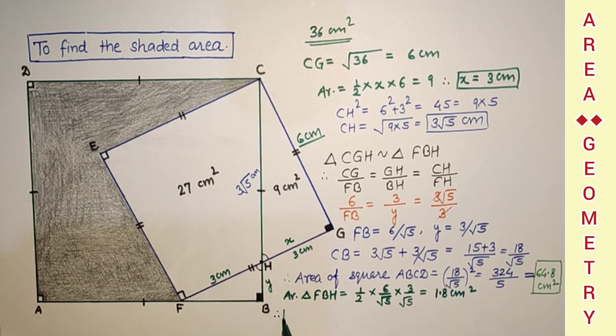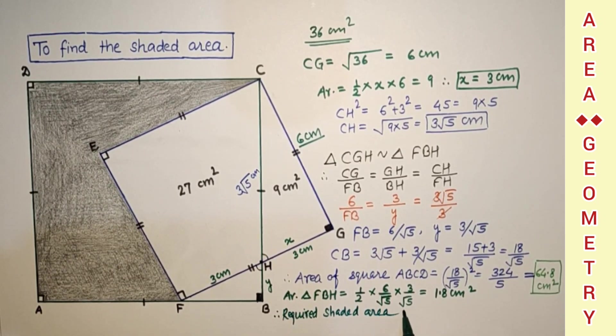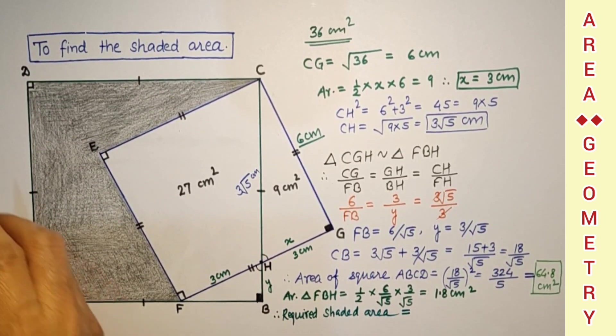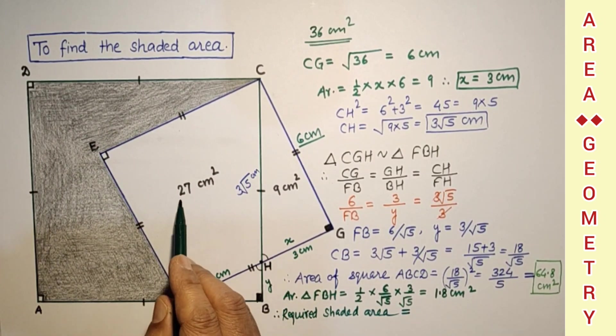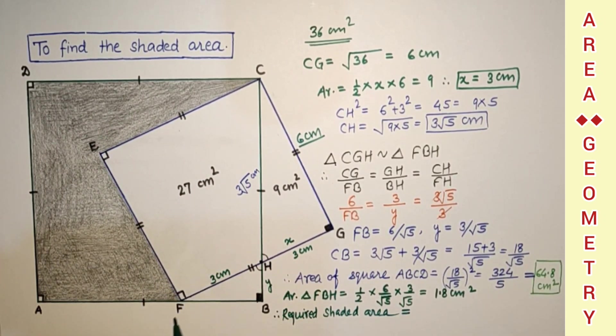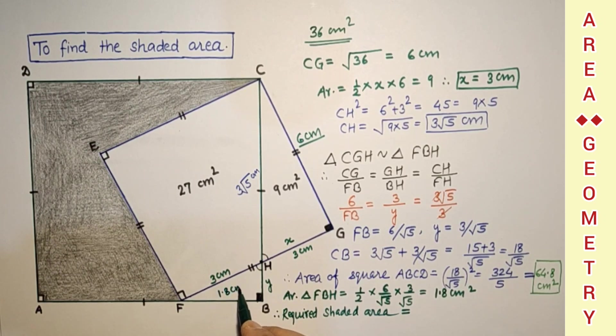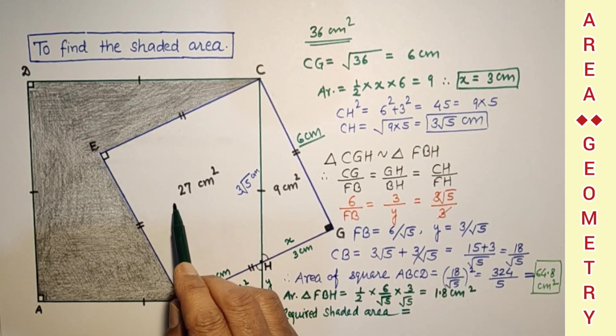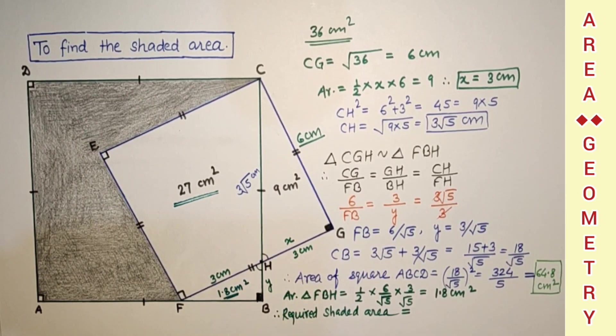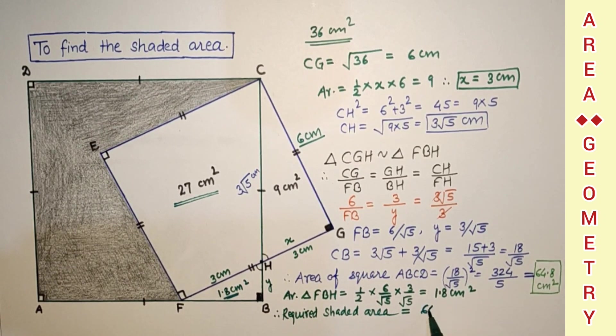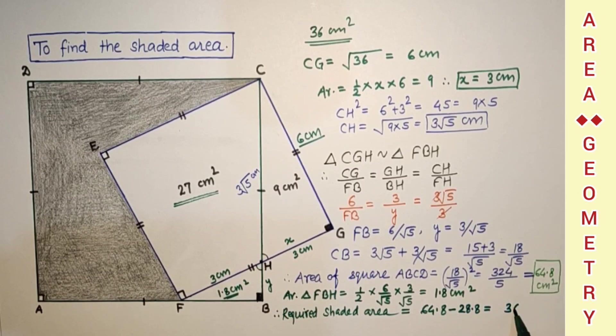Therefore required shaded area is equal to area of this square minus 27 minus 1.8. This we found 1.8 centimeter square. If we add 27 and this, we are getting 28.8 centimeter square. 64.8 minus 28.8 and that is equal to 36 centimeter square.